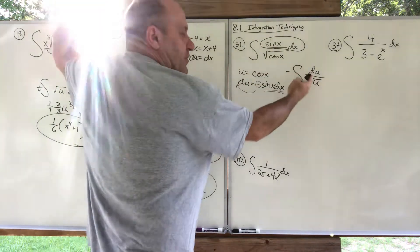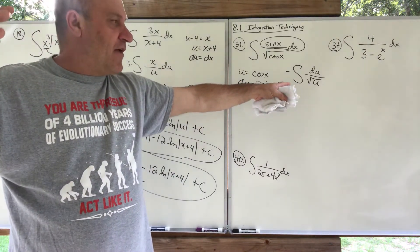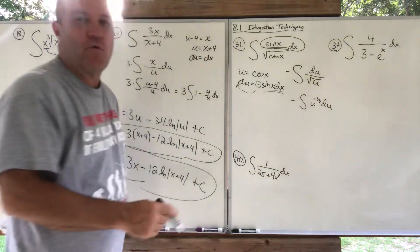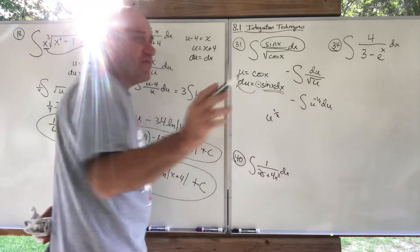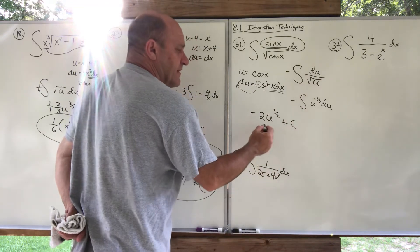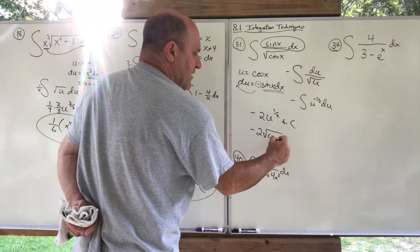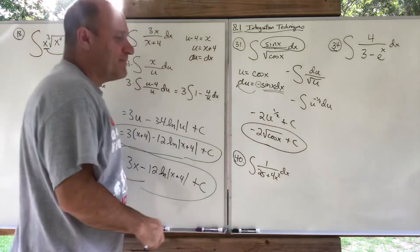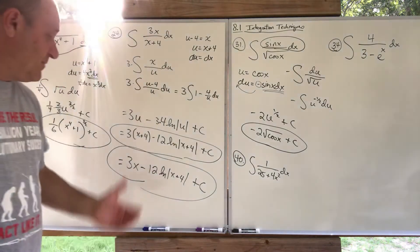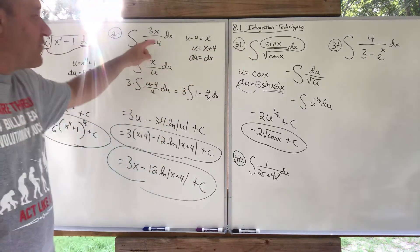We now have a familiar form — just a power rule. Move it up: u^(−1/2) du with a negative out front. Apply the power rule: add 1 to get u^(1/2), divide by 1/2 means multiply by 2, with the negative sign out front, plus C. Substituting back, u = cos(x): the answer is −2√(cos(x)) + C. You could verify by differentiating and applying the chain rule.